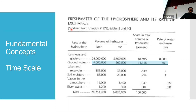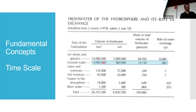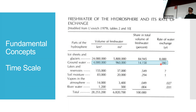Groundwater is a reservoir, and it's an important component of the water balance. If you think about it, glaciers have the most fresh water on our planet, groundwater comes next, and then lakes, reservoirs, and rivers come next — a much smaller amount. The recharge rate on average for the groundwater system is about 300 years. Some systems recharge on an annual scale; some systems recharge over thousands of years.